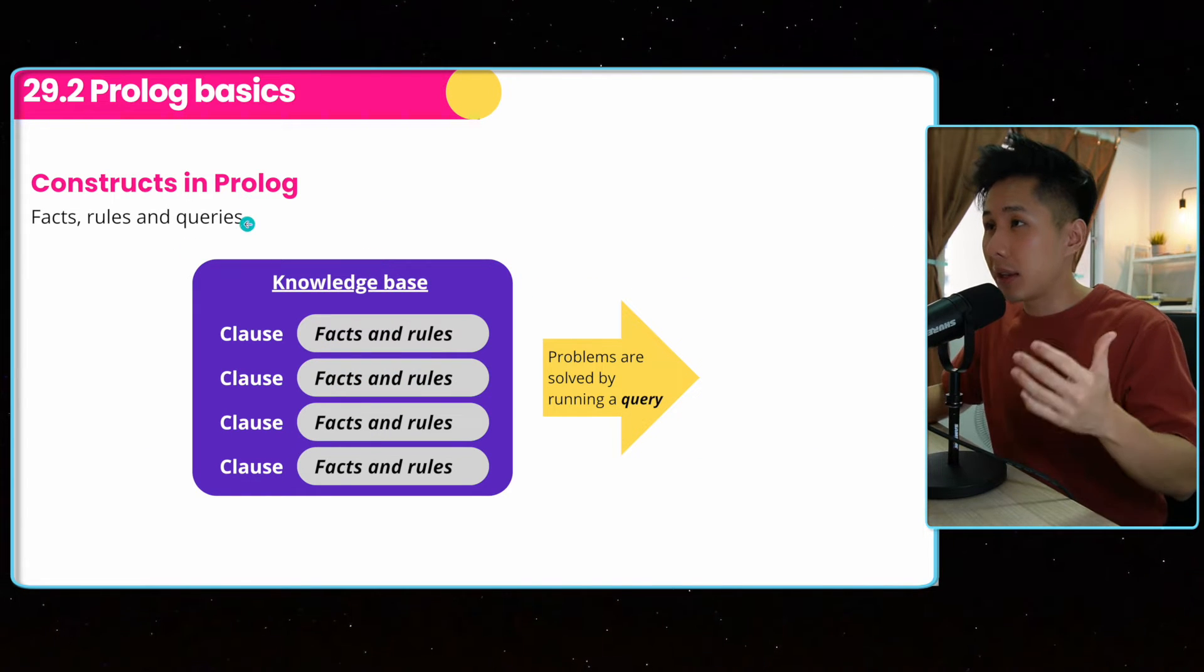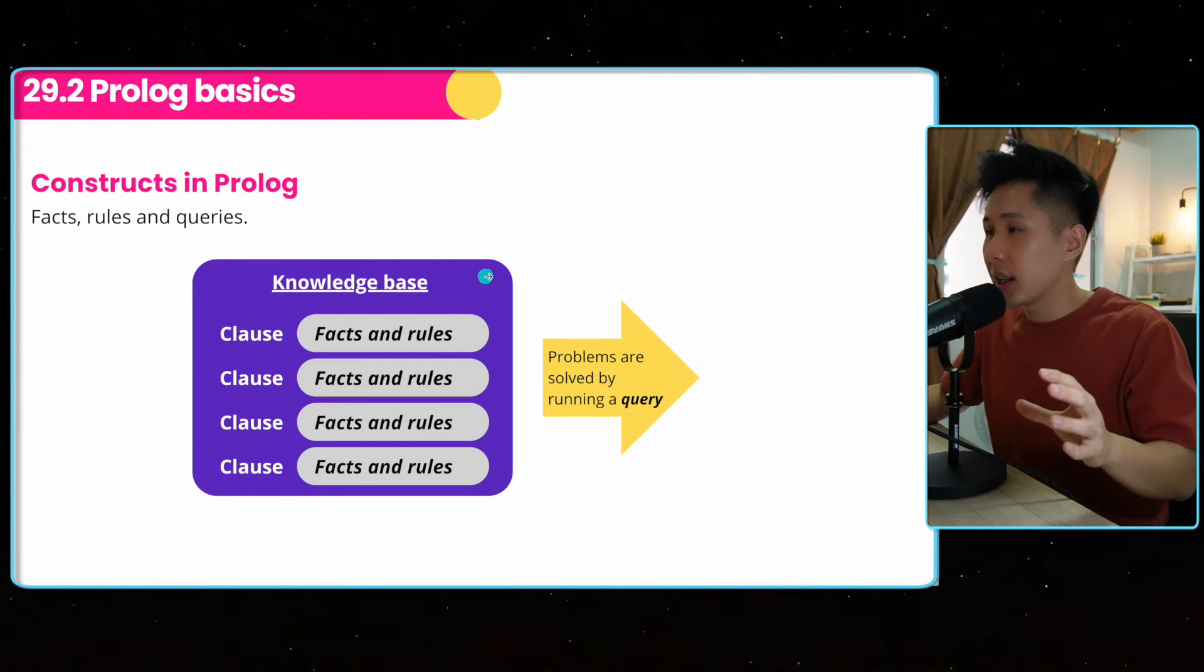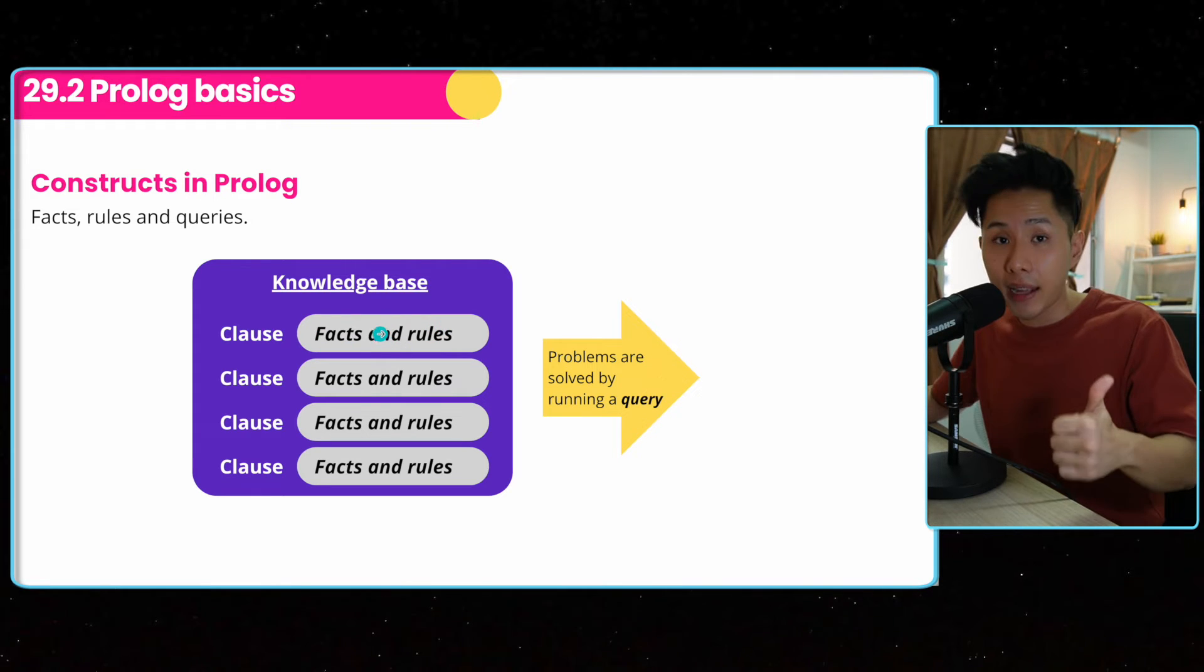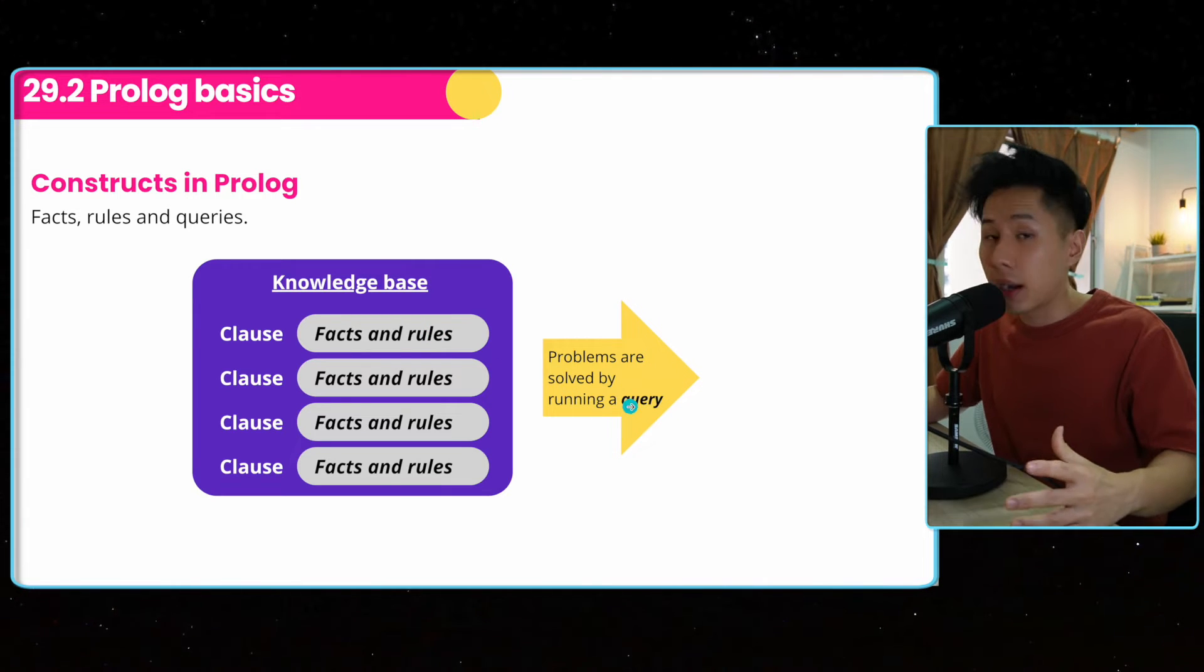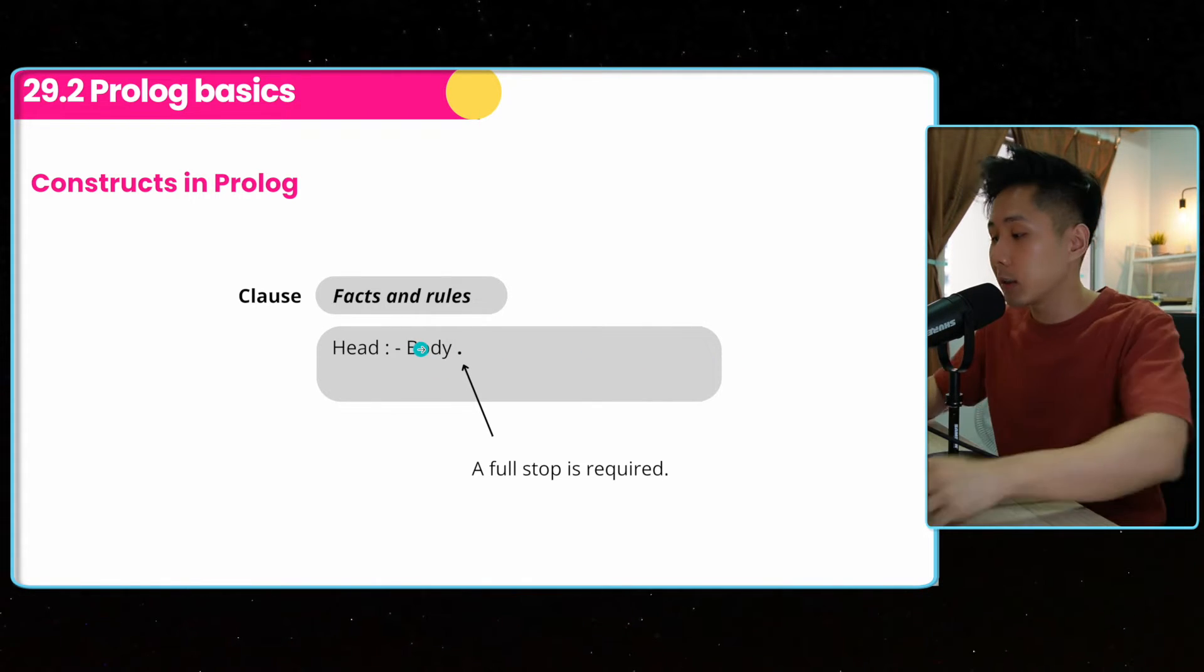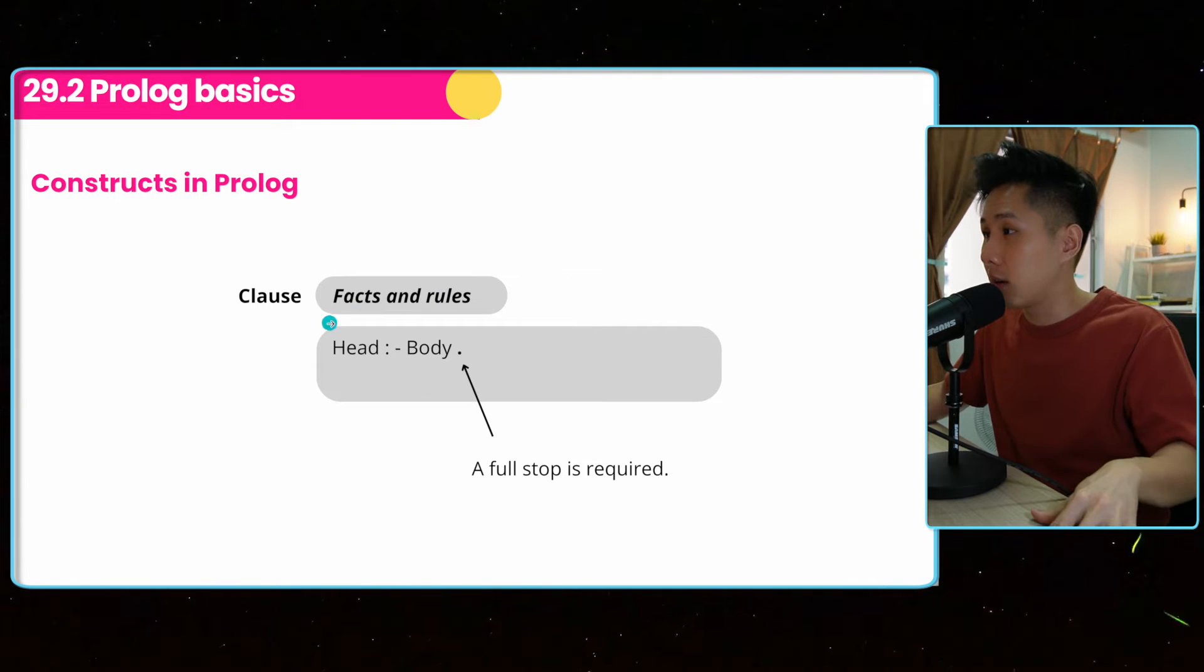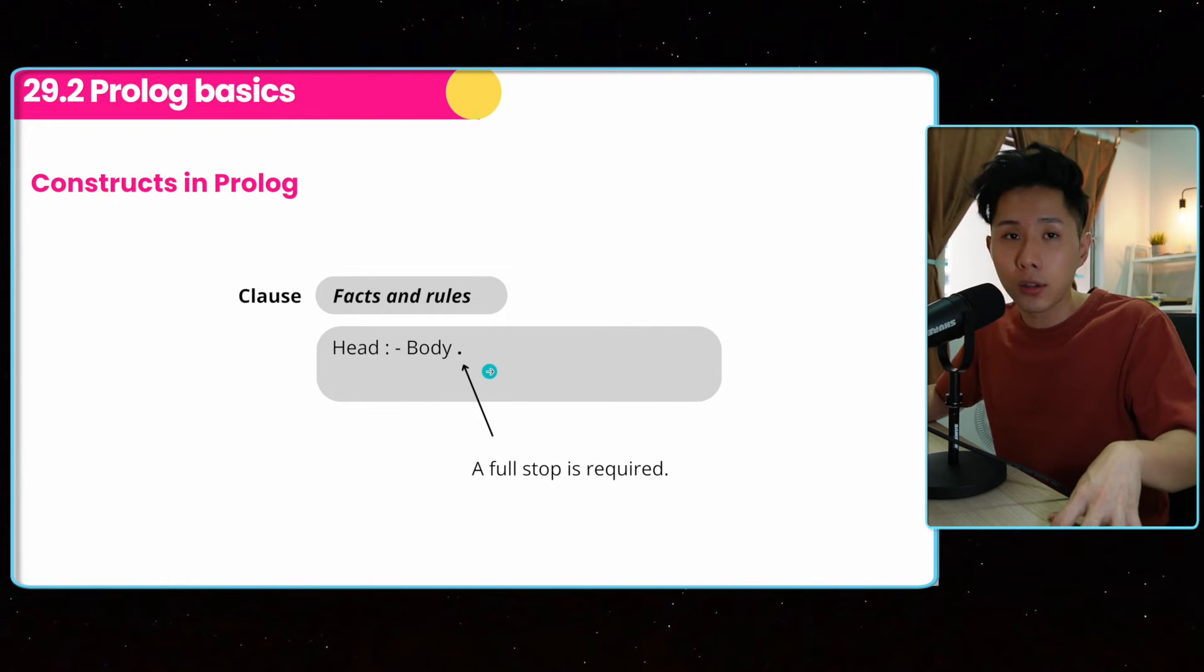To understand Prolog, you need to understand what are the constructs. We have facts, rules and queries. And in Prolog, you need something called the knowledge base. And within each base, you can write as many clauses as possible. And each clause will contain facts and rules, sometimes without the rules, but at least some facts. And then you can solve a problem by running a query. And I believe that when we are discussing about this, it's a bit vague. So this is why in this video, I'll also be showing you some Prolog code, and how we run the query in the terminal.